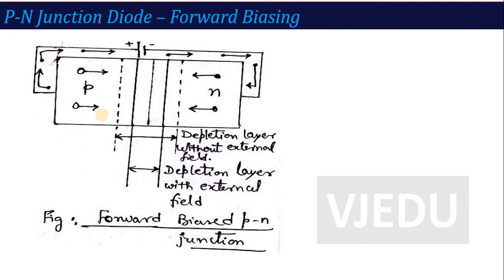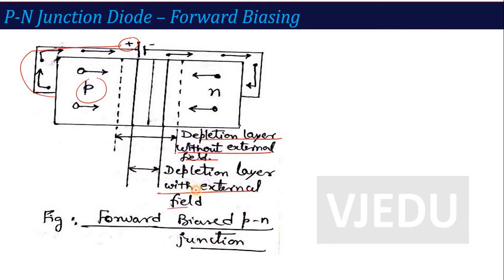A very important question asked most of the time in interviews is: what will the depletion layer do in forward bias? As shown in the diagram, the width of the depletion layer without external field is original. But when you apply positive voltage — forward biasing, with p connected to the positive terminal of the battery — the depletion layer with external field is reduced.